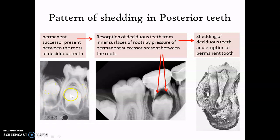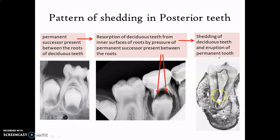In posterior teeth, since the successor teeth are located between the divergent roots of primary molars, as the tooth germ grows, it exerts pressure on the inner surface of the roots, and resorption starts on the inner surface of the roots of these primary molars. As resorption is two-thirds complete, there will be shedding of primary molars and eruption of permanent successor teeth, which are premolars.